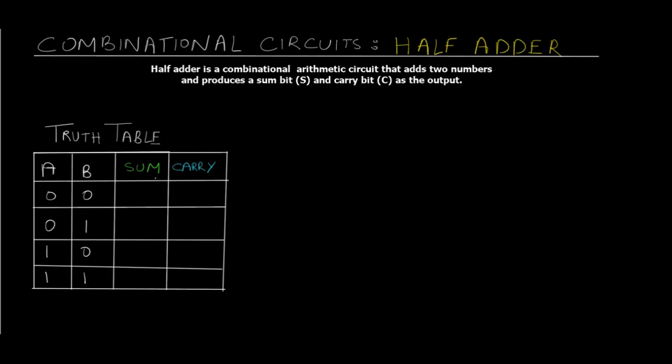Combinational circuits are logic gates which are combined in a particular pattern to get a certain output. Before we actually go into combinational circuits and half adder, you need to know what Boolean algebra is and you also need to know the basic logic gates.